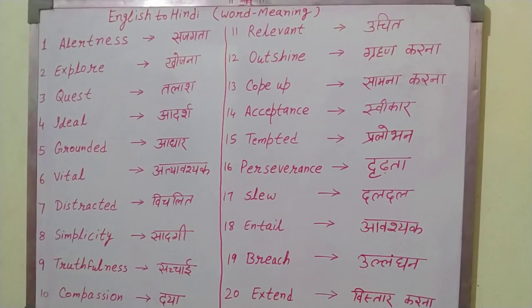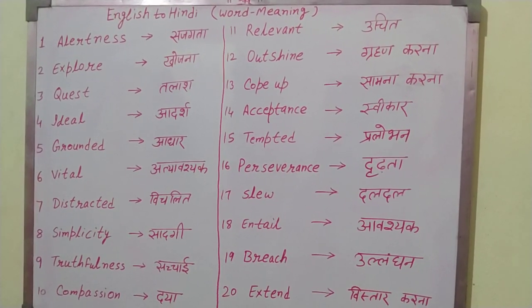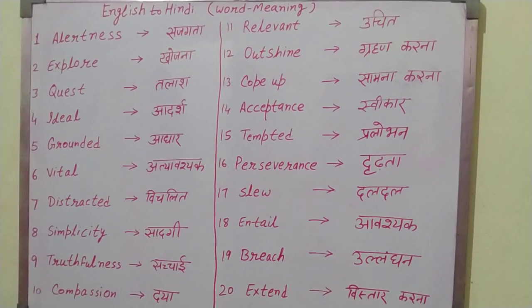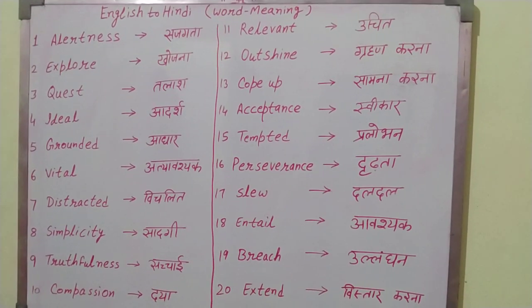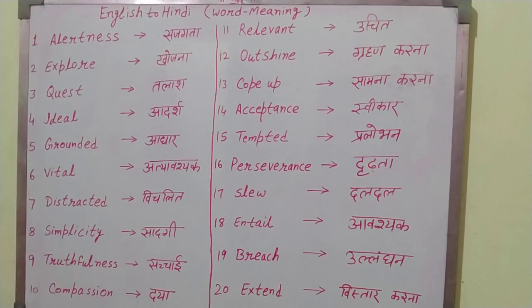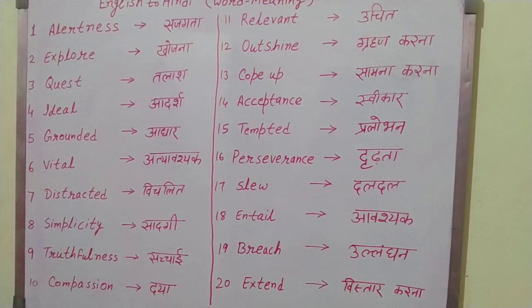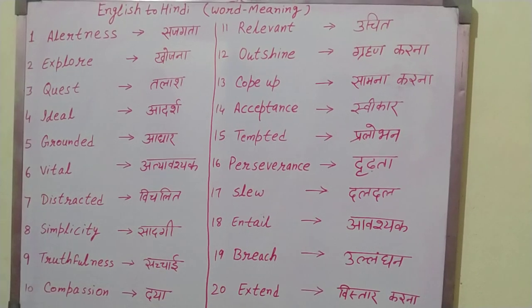Number 1: Alertness — Sajagta. Number 2: Explore — Khujna. Number 3: Quest — Talash. Number 4: Ideal — Adarsh.